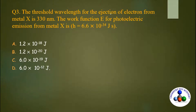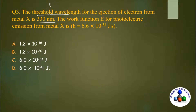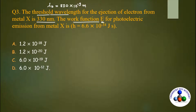Next question: the threshold wavelength for ejection of electrons from metal X is 330 nanometers. The work function for photoelectric emission for metal X is? Threshold wavelength λ₀ = 330 nm is given. Convert to meters: 330 × 10⁻⁹ m. We need to calculate the work function E, using E = hν₀ = hc/λ₀.